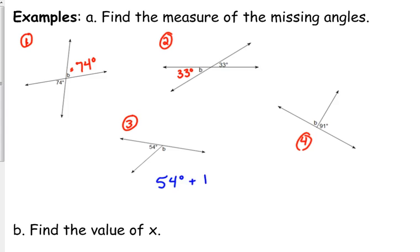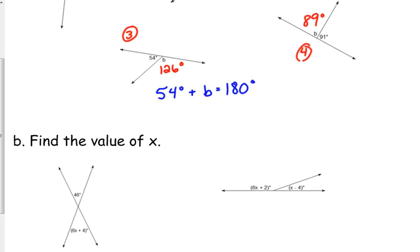For linear pairs, when we add them together we get 180 degrees. So 54 degrees plus B equals 180 degrees — subtract 54 from 180 and we get 126. And for number four, the missing value is 89.